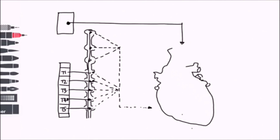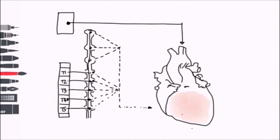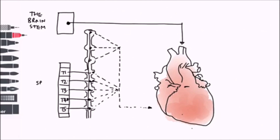The vagus nerve is responsible for the parasympathetics, and this comes from the brainstem. It reaches the heart via pre-ganglionic fibres that go to a cardiac plexus, and then post-ganglionic fibres leave that plexus to reach the heart and the conduction system.